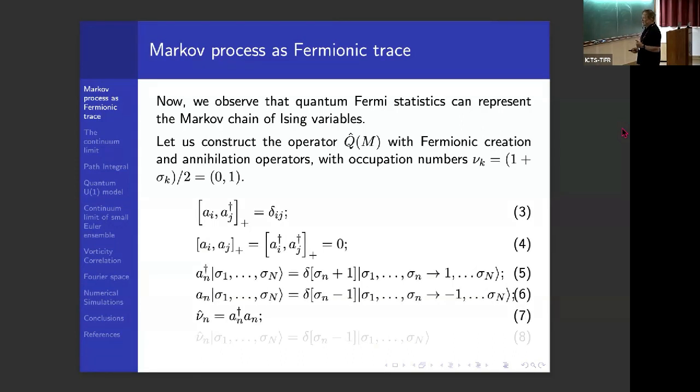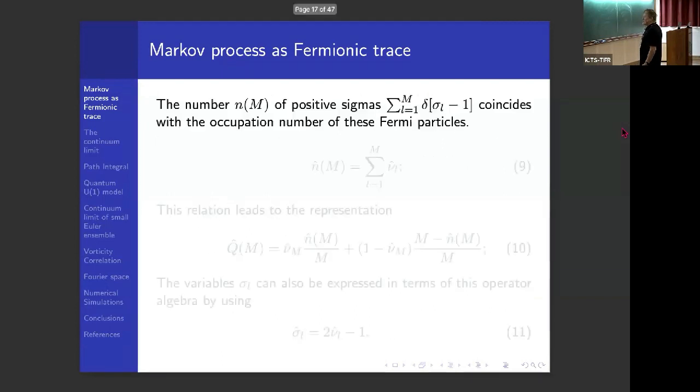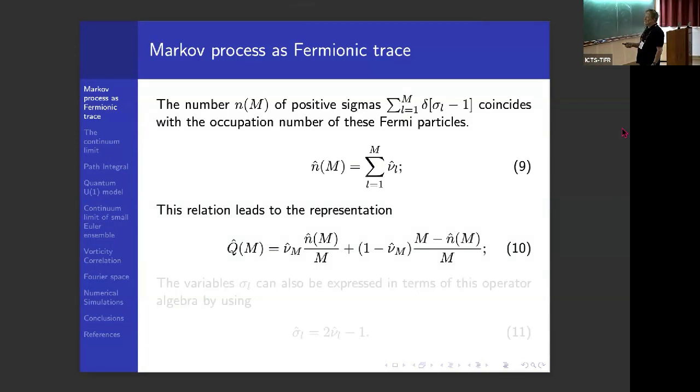So this is anti-commutation relations needed for that. And a dagger is a creation operator. It is acting on arbitrary states. It selects only the state which has sigma equals minus 1, and forces it to the state sigma equal 1. And likewise, the annihilation operator does the opposite. And the number, nu, a dagger n, is a very well-known occupation number of the fermions. And these numbers are commuting with each other, so they are acting like numbers. But not just simple numbers, numbers which take only two values, 0 and 1.